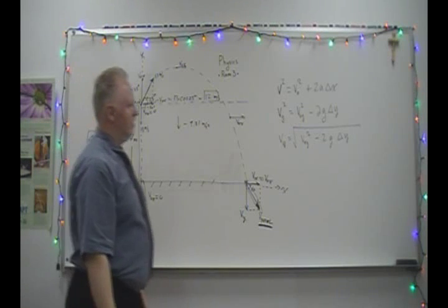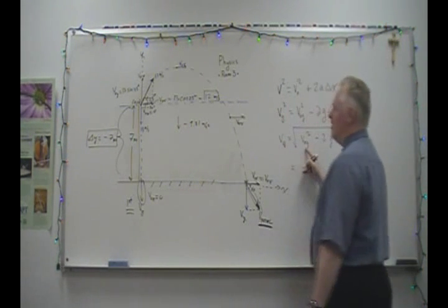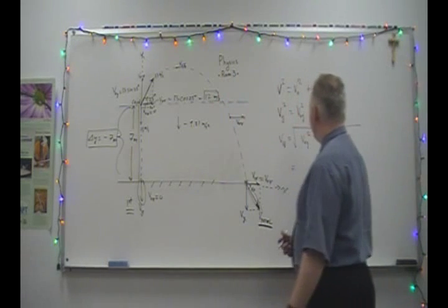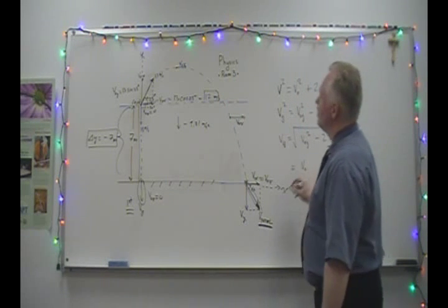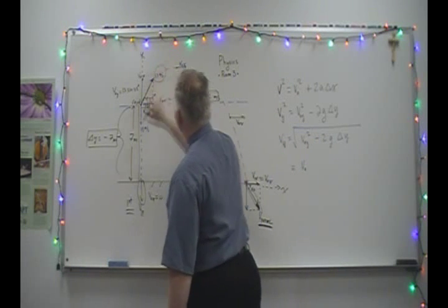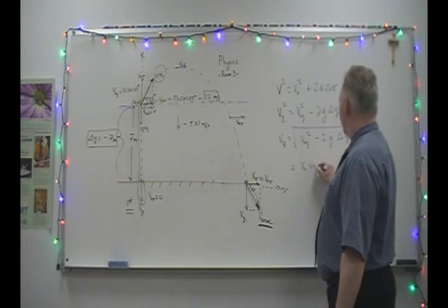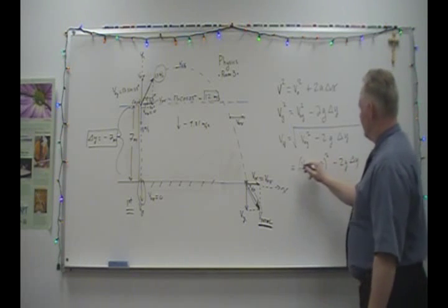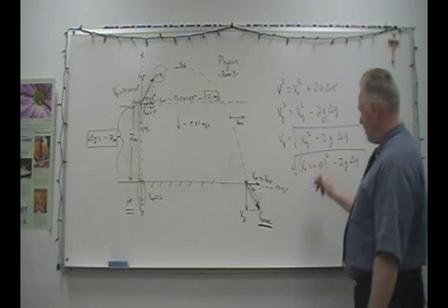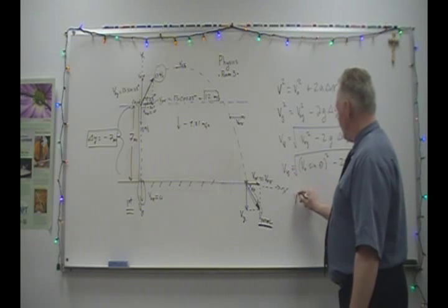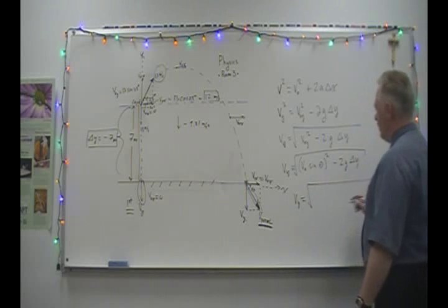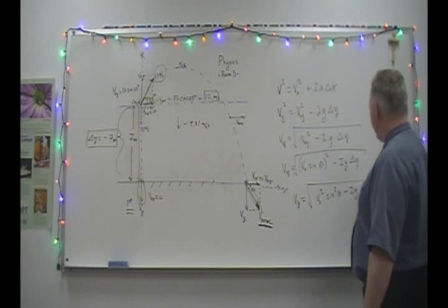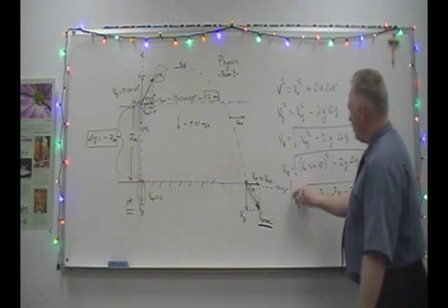For the first snowball, the angle is effectively negative 90 degrees (straight down). For the second, it's plus 25 degrees. Same initial speed and everything else equal. The acceleration due to gravity is negative 9.81 meters per second squared downward. We can simplify to: Vy equals the square root of (V_initial_y squared minus 2g times delta y). This is the formula I'll use for both cases.